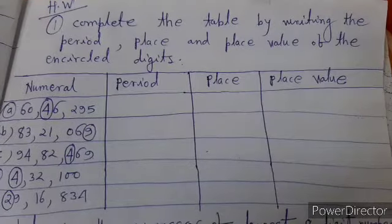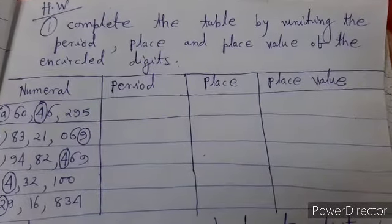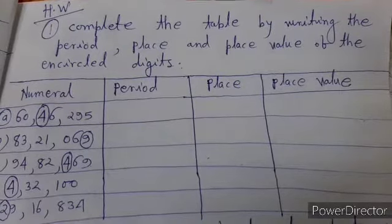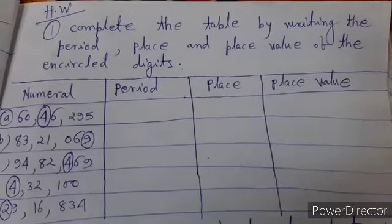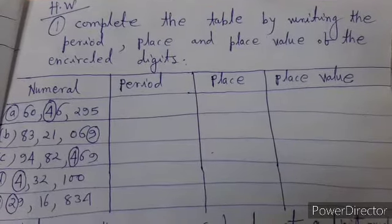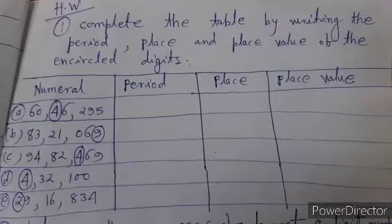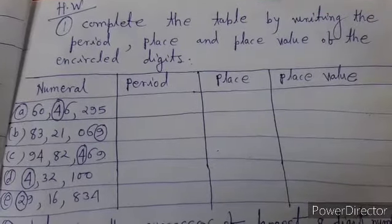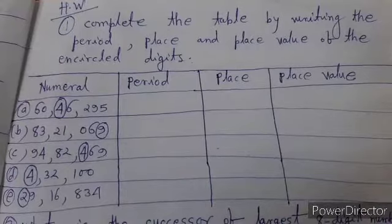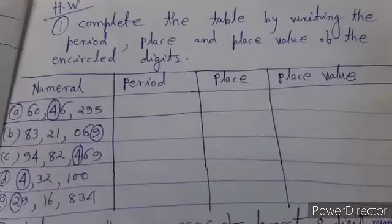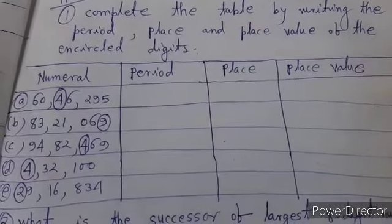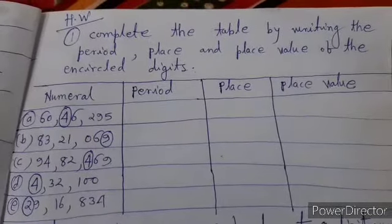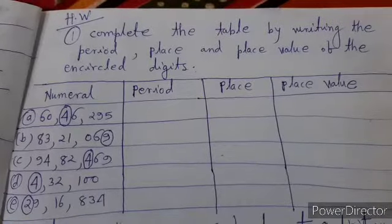Now I give you some problems to solve at home. First problem: Complete the table by writing the period, place and place value of the encircled digits. A: 60,46,295, B: 83,21,069 where 9 is encircled, C: 94,82,469 where 4 is encircled, D: 4,32,100 where 4 is encircled, E: 20,16,834 where 2 is encircled.